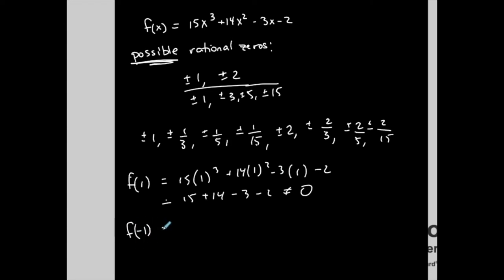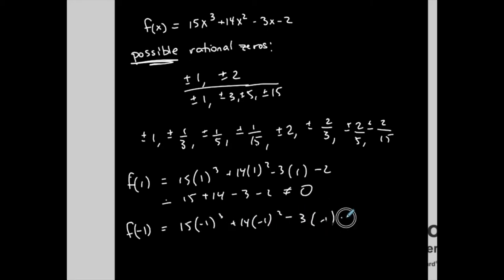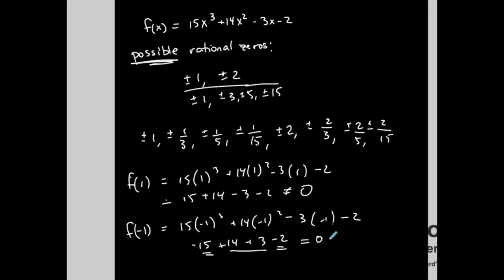Let's try negative 1. We get 15 times negative 1 cubed plus 14 times negative 1 squared minus 3 times negative 1 minus 2. That gives negative 15 plus 14 plus 3 minus 2. This is positive 17 and negative 17, which gives me zero. So negative 1 is my first actual zero.